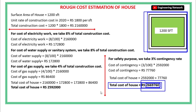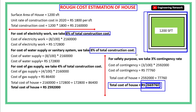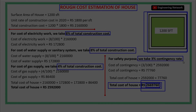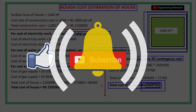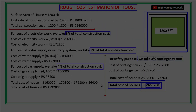So this is how you can easily do the rough cost estimation of any house within a few minutes, if you remember the percentage of each material used in the construction of a house. If you find this video informative then please click on the like button, share it with your friends, and if you are new to my channel then please click on the subscribe button. Also make sure to press the bell icon for more engineering videos. See you in the next video.